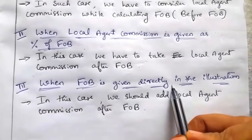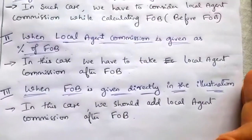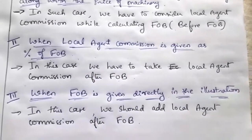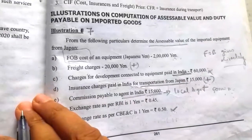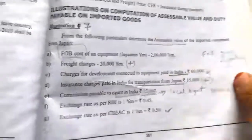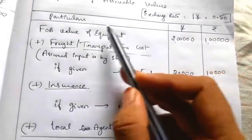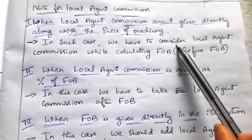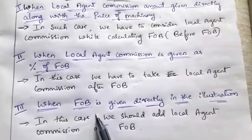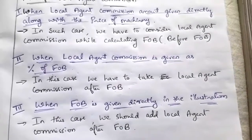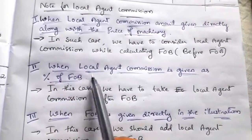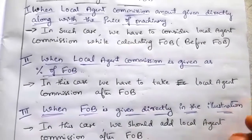Summary of the three cases: when local agent commission amount is given along with machinery price, add before FOB; when FOB is given directly, add local agent commission after FOB; and when local agent commission is given as a percentage of FOB, add it after FOB as well. In Cases 2 and 3, local agent commission is added after FOB.